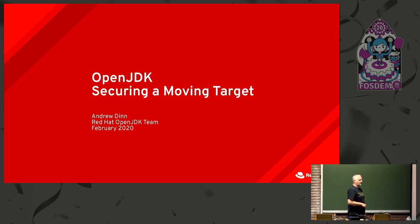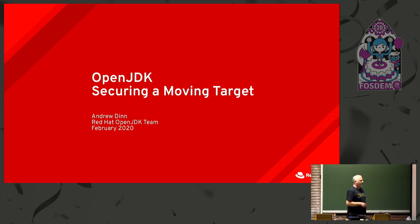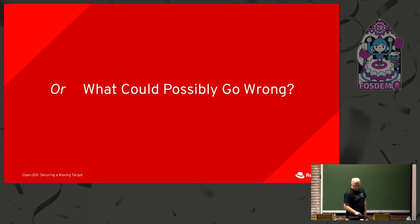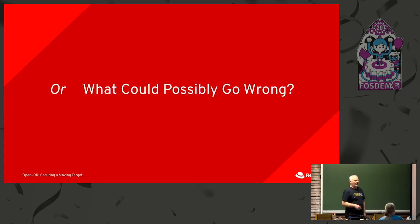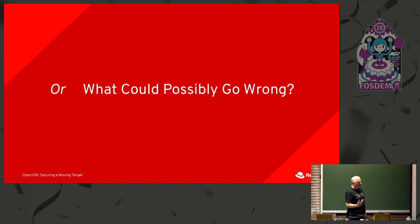This talk is about security issues arising at OpenJDK. I've called it 'Securing a Moving Target' - that's the aspect of OpenJDK I think is interesting to talk about in terms of security. The subtitle is 'What Could Possibly Go Wrong?' - meaning what things might cause problems that are specific to the nature of OpenJDK, the class libraries, the JVM, that wouldn't happen in many other types of applications.